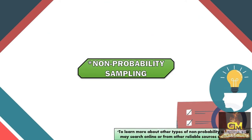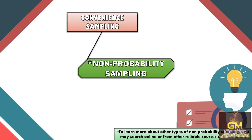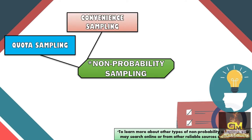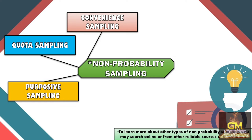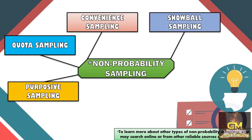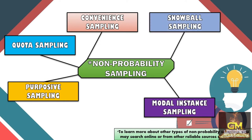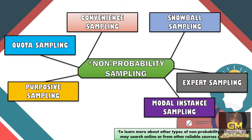Now we're going to learn some of the non-probability sampling techniques. These are: convenience sampling, quota sampling, purposive sampling, snowball sampling, modal instance sampling, and expert sampling.